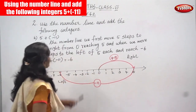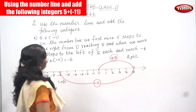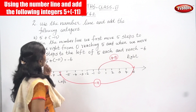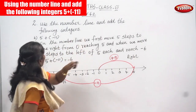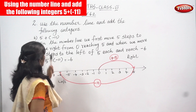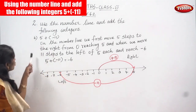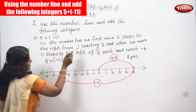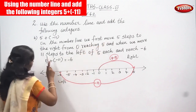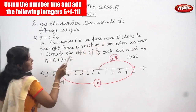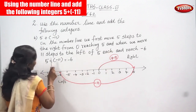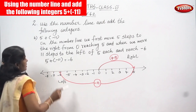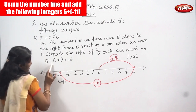Hi, welcome to Pebbles. In today's class we are going to see Maths Class 6 Exercise 6.2, second question: use the number line and add the following integers. The question I'm doing is 5 plus minus 11. On the number line, we first move five steps to the right from zero, reaching 5, and then move 11 steps to the left of 5, and reach minus 6.